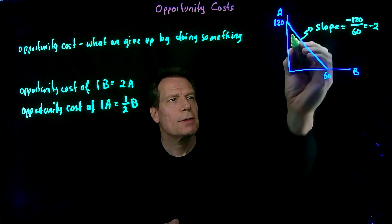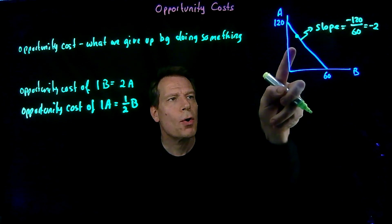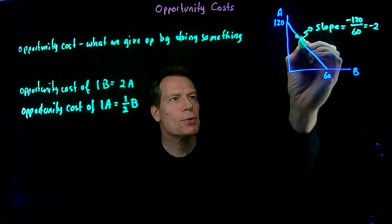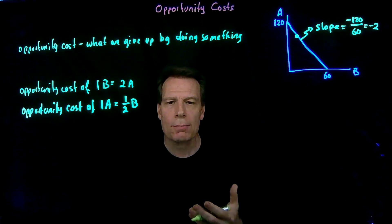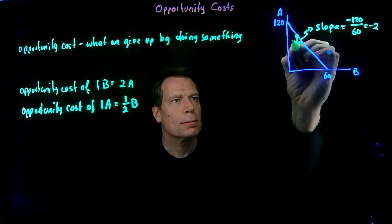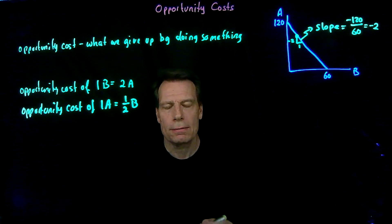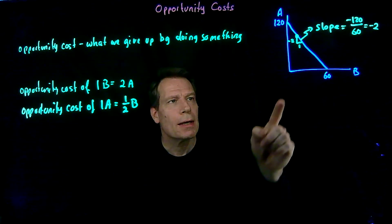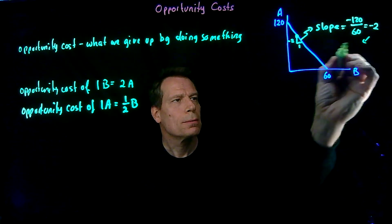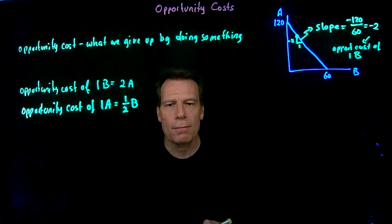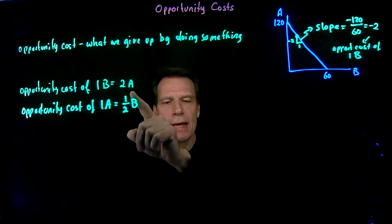What does that slope tell us? It tells us that if we start at a point and we want to go over by 1, we have to go down by 2. So if we want to produce an additional banana, we can't just produce it and stay at the same apple production — that would take us outside of the production possibilities curve. Instead, to go over by 1, we have to go down by 2. In order to produce an additional banana, we have to give up 2 apples. In other words, this slope tells us the opportunity cost of 1 banana — the opportunity cost of 1 banana is 2 apples.